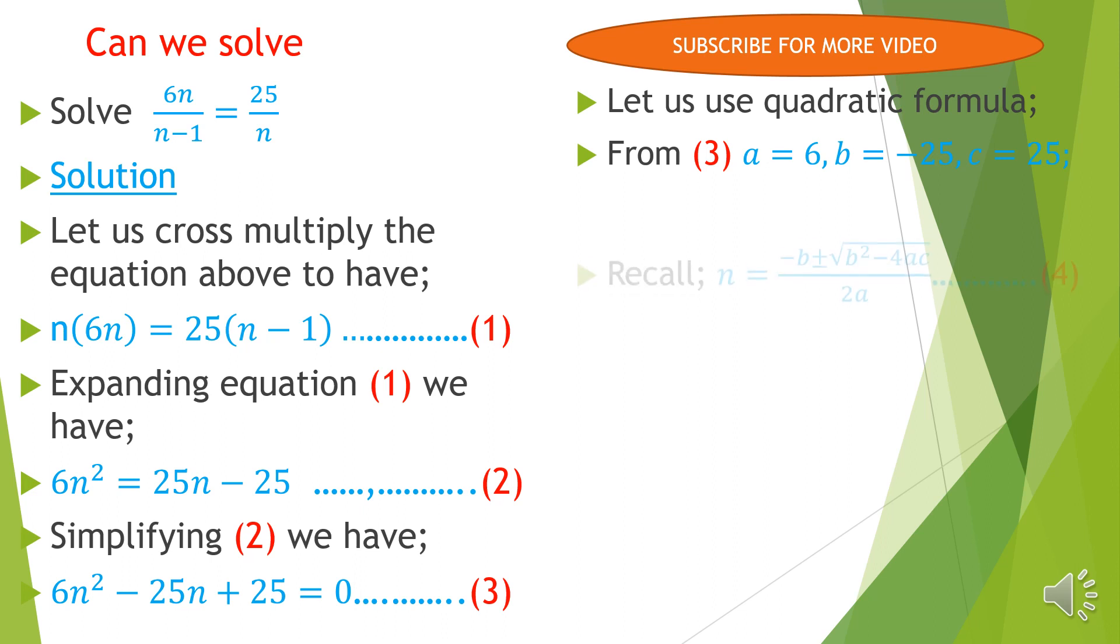Recall the quadratic formula: n = (-b ± √(b² - 4ac))/2a. Now we can substitute in the values.